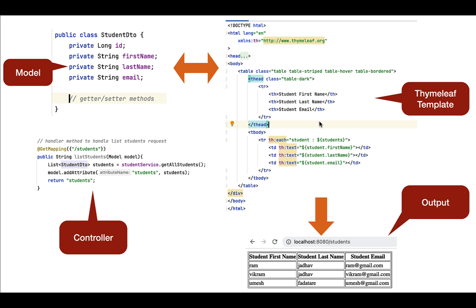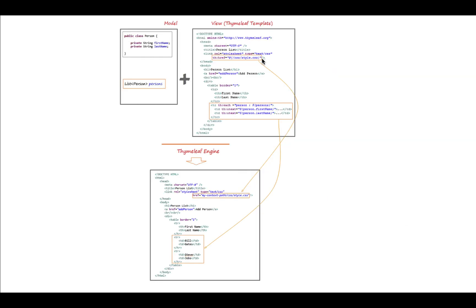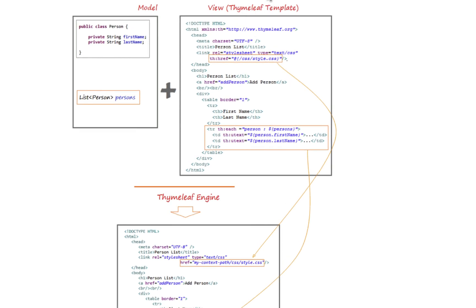So basically, the Thymeleaf engine will parse this Thymeleaf HTML template and it uses model data to replace the positions marked on the Thymeleaf template to create new text in the HTML page. Let's consider one more example — we have a Thymeleaf HTML template, a model, and we have the output of the Thymeleaf engine. The engine parses the template and uses Java model data to replace the marked positions.